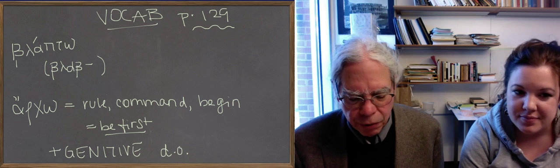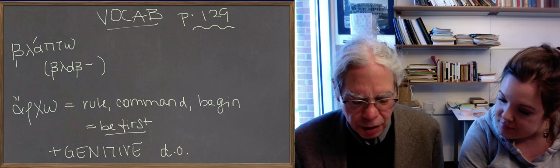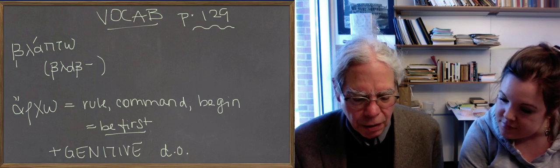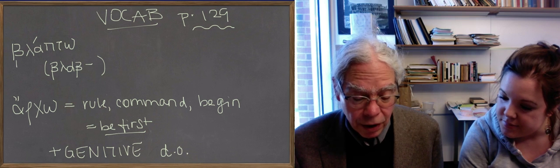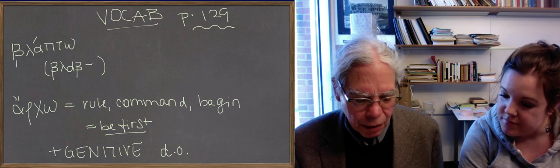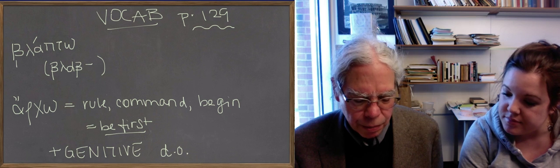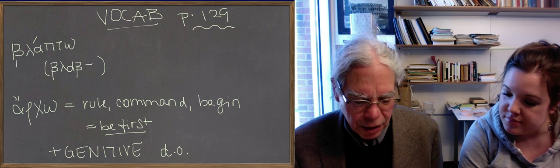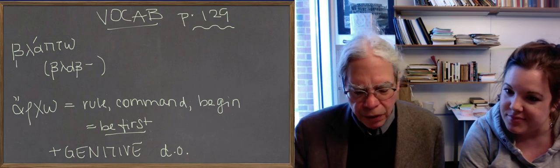The principal parts are pretty straightforward. So ἦρχα with an aspirated final consonant. It's already aspirated. ἦργμαι is your perfect passive. And ἤρχθην for the aorist passive with a theta.